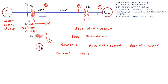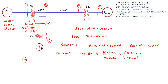Now I am going to find out ZPU new for the generator and transformer 1. The formula is: ZPU new = ZPU old × (MVA new / MVA old) × (KV old / KV new)². First I am going to find out ZPU new for generator 1. ZPU old is 0.2 per unit, MVA new is 50 MVA, MVA old is 20. KV old is 13.8 and KV new is also 13.8, so 13.8 divided by 13.8 the whole square.